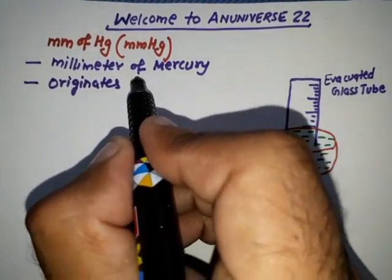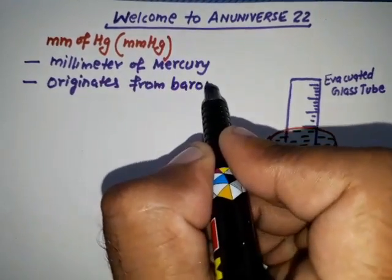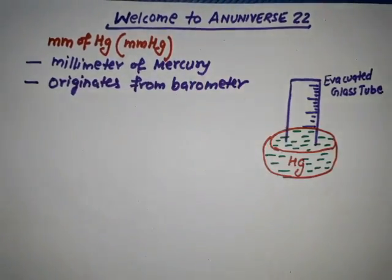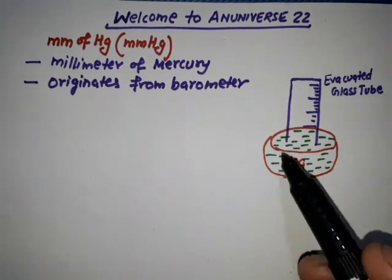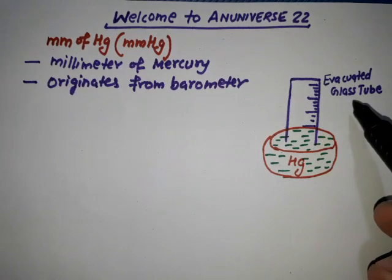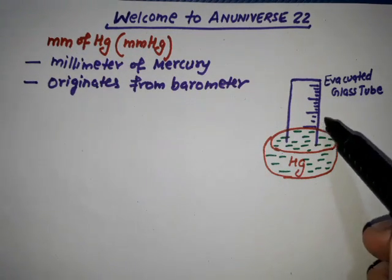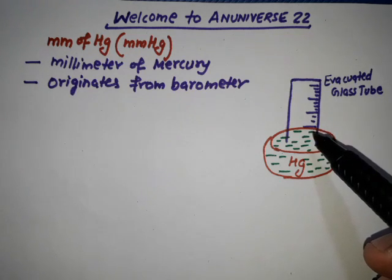This term originates from the barometer. Here is mercury in a container, and this is an evacuated glass tube, which means vacuum. This is the barometer.